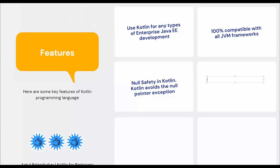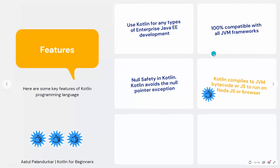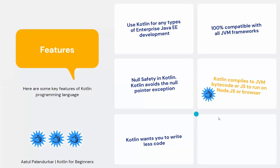Kotlin compiles to JVM bytecode or JavaScript to run on Node.js or the browser. So if you want to develop web-based applications with Kotlin, you can compile it to JavaScript and run it on Node.js or any browser. Kotlin also encourages you to write very less code — we'll see after a few slides how much code you can save and how you can achieve everything in fewer lines.